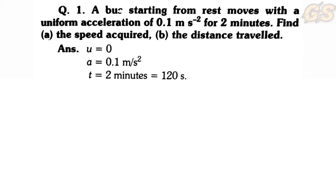Time t = 2 minutes. We will convert minutes to seconds: 1 minute = 60 seconds, so 2 minutes = 120 seconds.